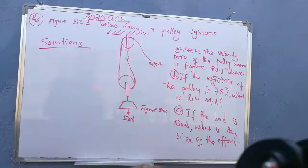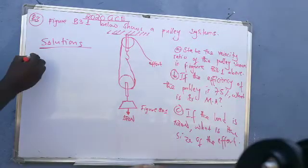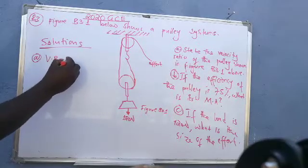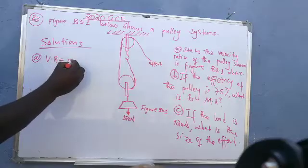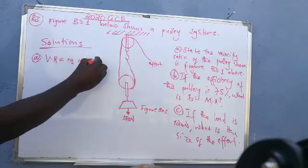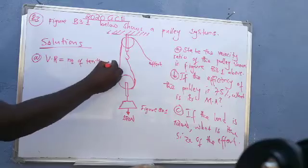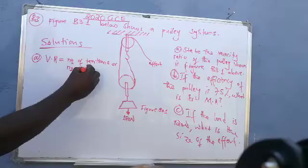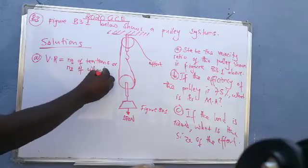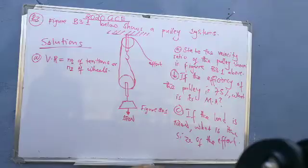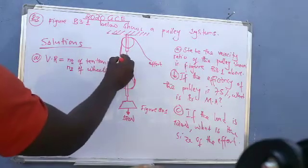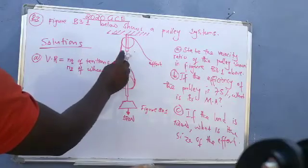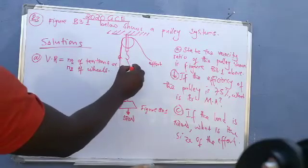To state the velocity ratio, we just say velocity ratio is equal to number of tensions. So we have two tensions. This is tension one. This is tension one, and that is tension two. So tension one T1, T2, T2.